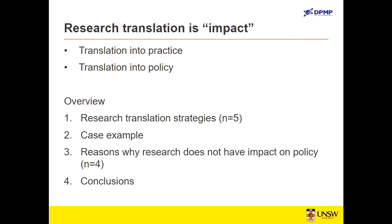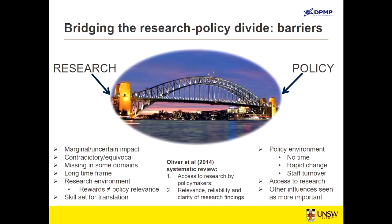I'm going to cover four things: research translation strategies, a case example, why it doesn't work, and conclusions. There is enormous documentation of barriers in bridging the research-policy divide. On the research side, research is often quite marginal to policy decision making, has an uncertain relationship with what policy makers are interested in, is often contradictory and equivocal — which is actually the nature of the scientific method — and is missing in many domains. In the area of illicit drugs, there's a lot of research evidence we simply don't have to inform Australian policy.